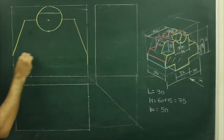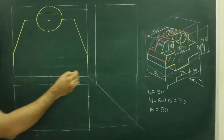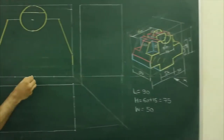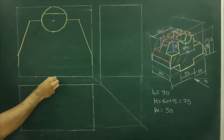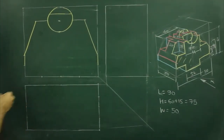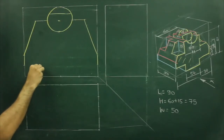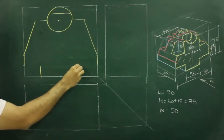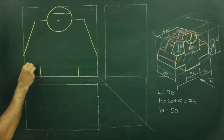Then come down. If you see, what they have given over there? 52. So that means from center, we need to take 26 on both the sides. Go up by 12 and draw horizontal.